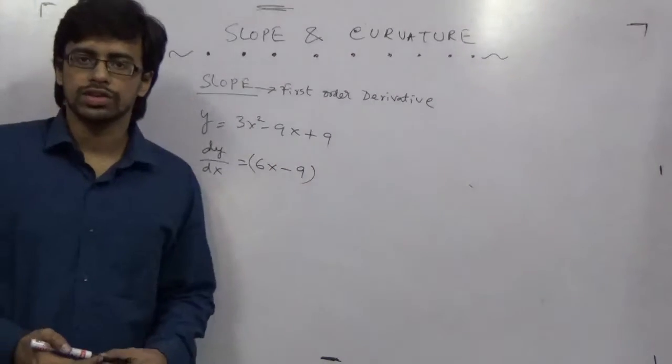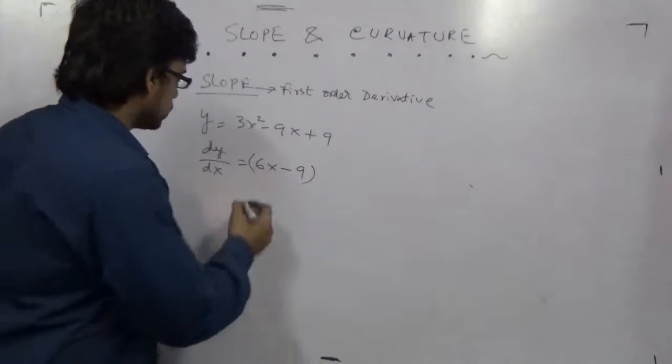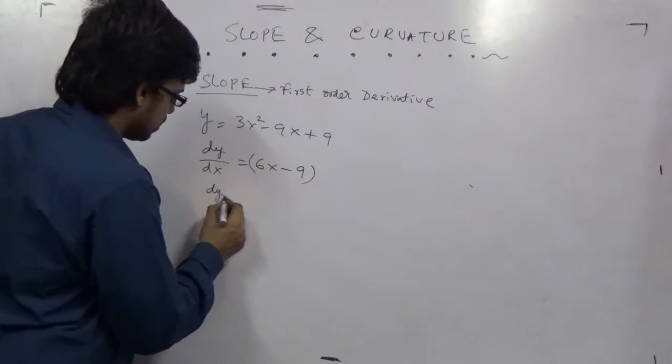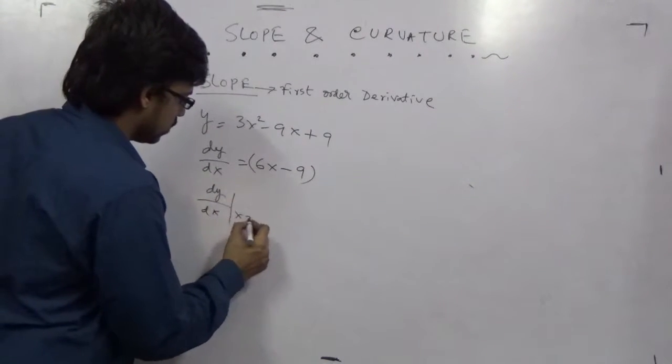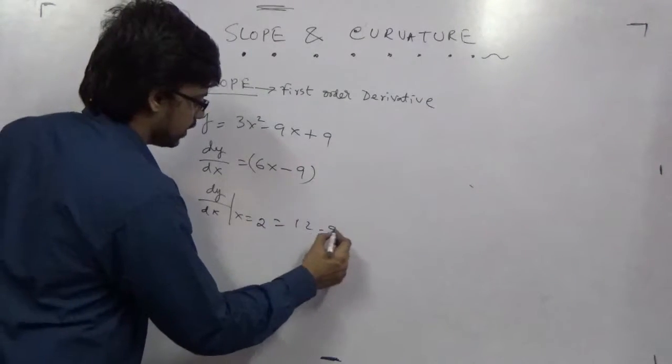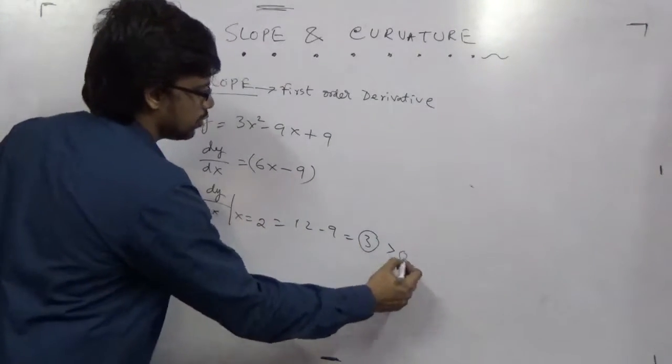Sometimes they give you the x value, like x = 2. So you can put this value here. dy/dx at x = 2 will give you 12 - 9, so the slope is 3 and it is positively sloped. Very easy.